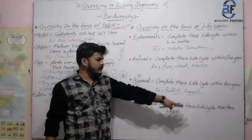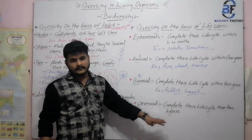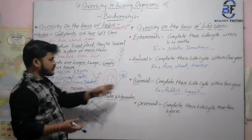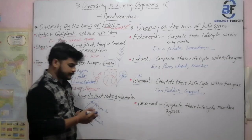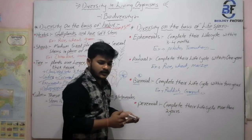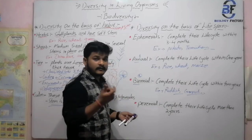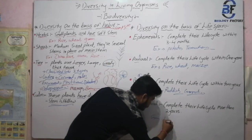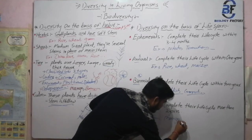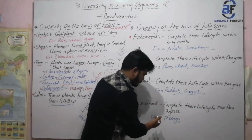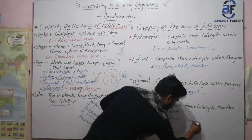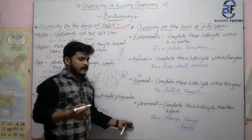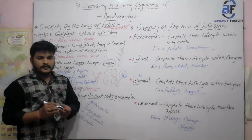In perennial condition, the plants complete their lifespan in more than two years — these are the big trees. Trees that come under deliquescent, such as banyan tree, mango tree, and tamarind plant, are common examples of perennial condition. Mango, banyan, and tamarind are common examples of perennial plants.